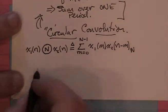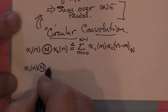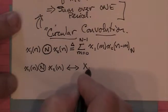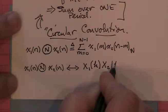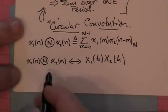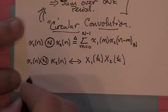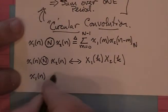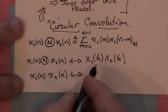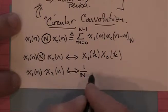The property we just derived says: if I circularly convolve two functions together and look at the N-point DFT, I end up just multiplying those DFT values together. The property we didn't derive is the dual property. If I take conjugates on both sides, I end up repeating the same derivation. So the second property is: if I multiply in the time domain instead of in the frequency domain, I end up doing a circular convolution. Because of the 1/N factor in the DFT, I get an extra 1/N factor out here as well.